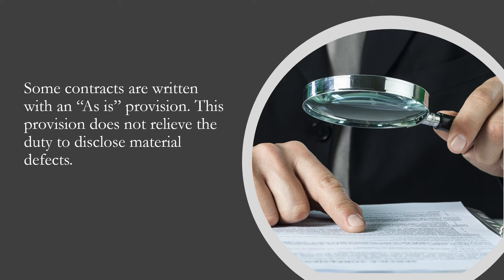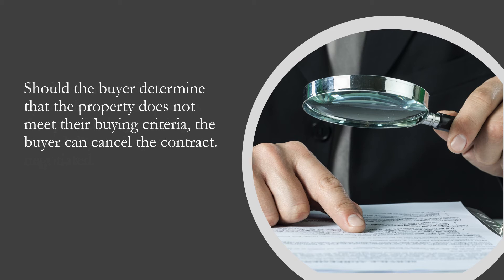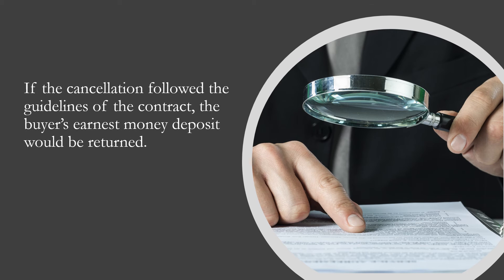Some contracts are written with an as-is provision. This provision does not relieve the duty to disclose material defects. As-is contracts include optional inspection periods that provide buyers with several days to inspect, as negotiated. Should the buyer determine that the property does not meet their buying criteria, the buyer can cancel the contract. If the cancellation followed the guidelines of the contract, the buyer's earnest money deposit would be returned.